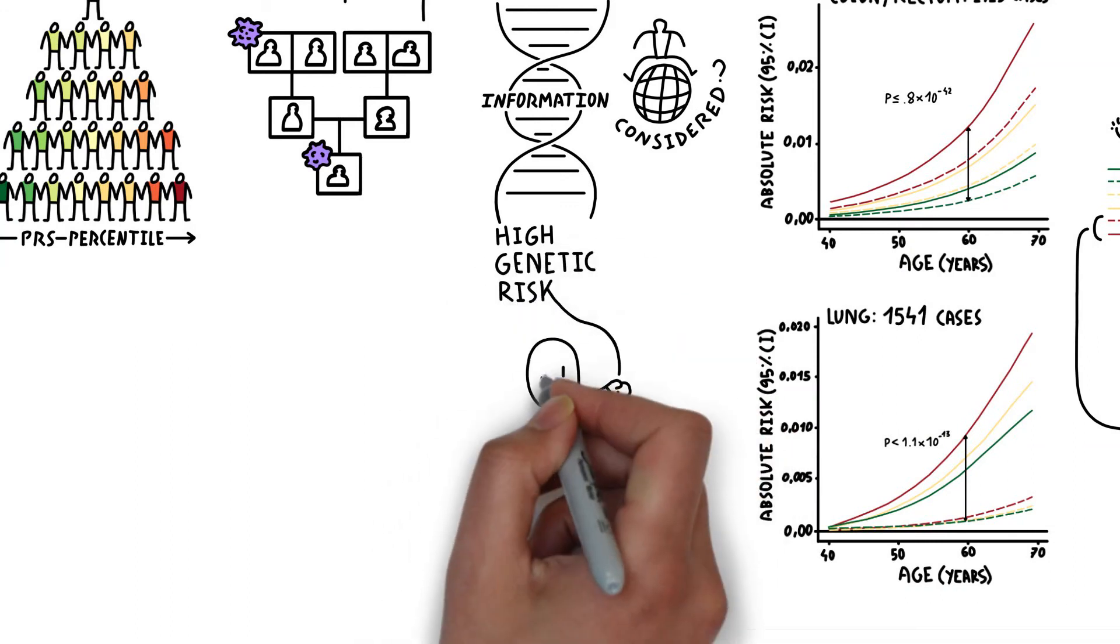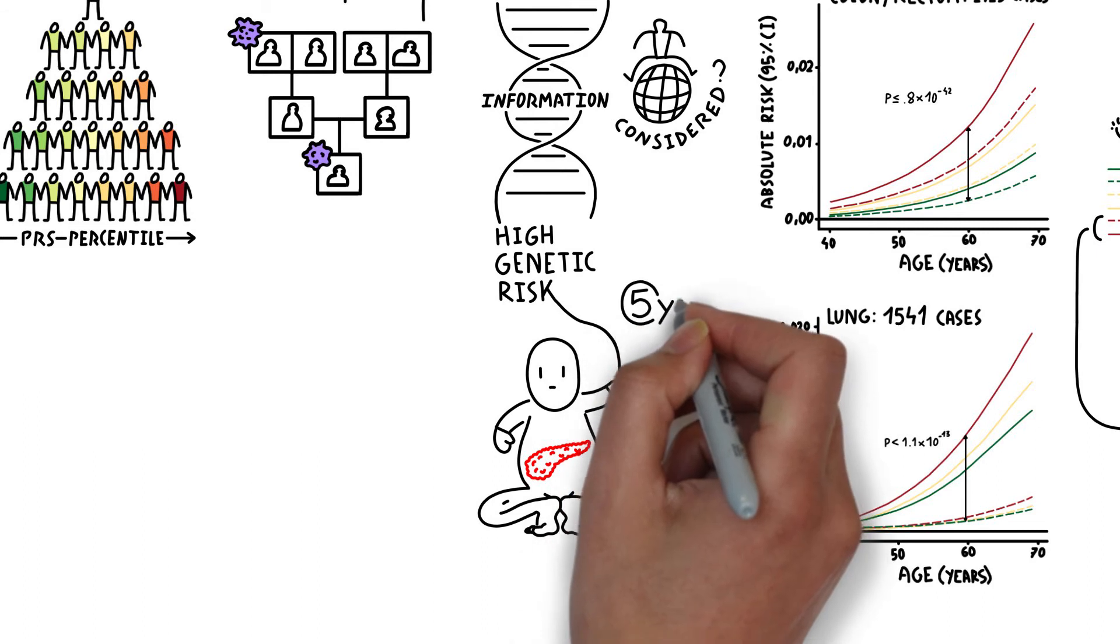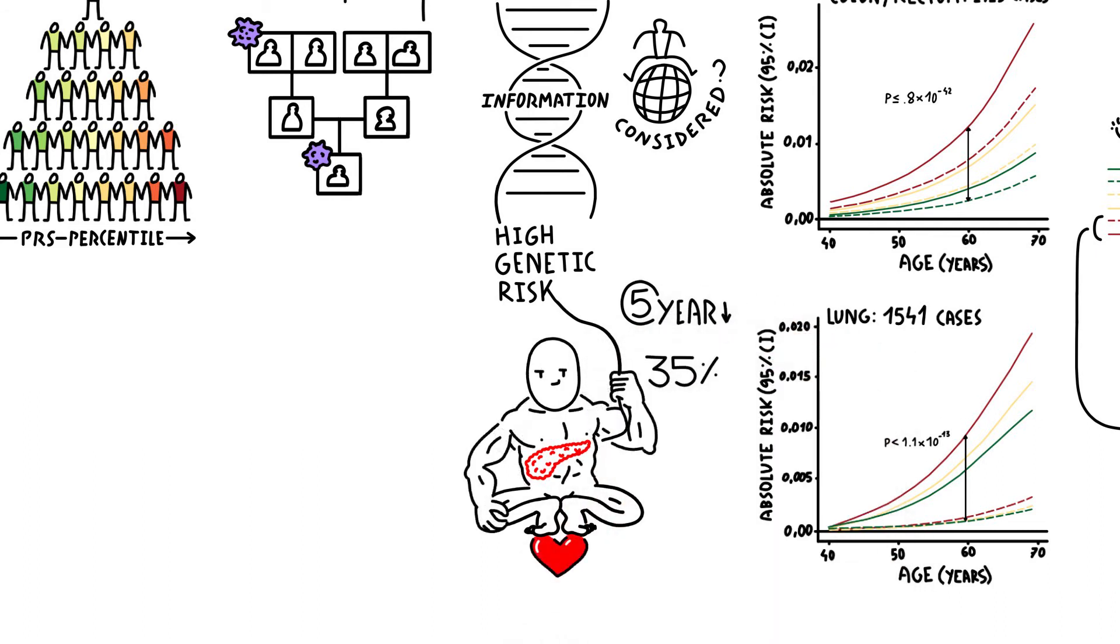For instance, someone with a high genetic susceptibility to pancreatic cancer could reduce their five-year risk by 35% by adopting a healthier lifestyle.